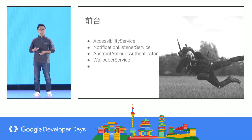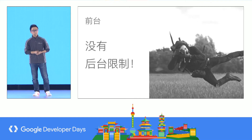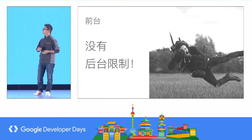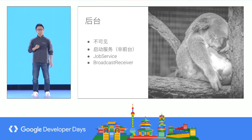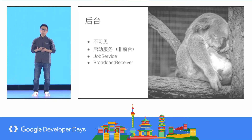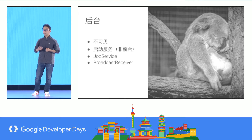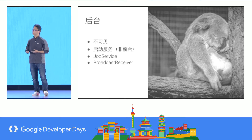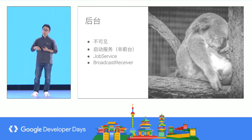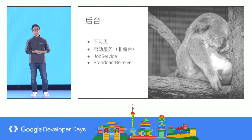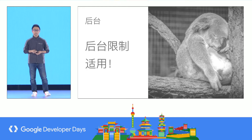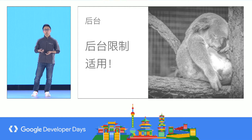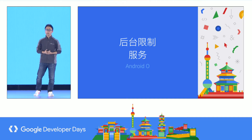We also have some special services that are considered foreground. For all of these cases, there is no background limitation because you are not actually in the background. But if you do not have a visible application, and you start a service working in the background, or have a job service and broadcast receivers in the background, then the system will apply background limitations.